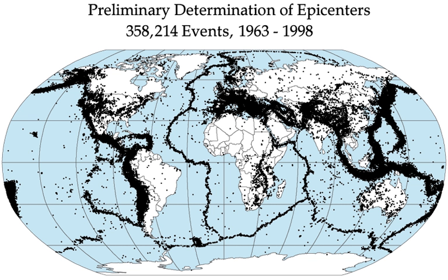The topmost, brittle part of the Earth's crust, and the cool slabs of the tectonic plates that are descending down into the hot mantle, are the only parts of our planet which can store elastic energy and release it in fault ruptures. Rocks hotter than about 300 degrees Celsius (572 degrees Fahrenheit) flow in response to stress; they do not rupture in earthquakes. The maximum observed lengths of ruptures and mapped faults which may break in a single rupture are approximately 1,000 km.